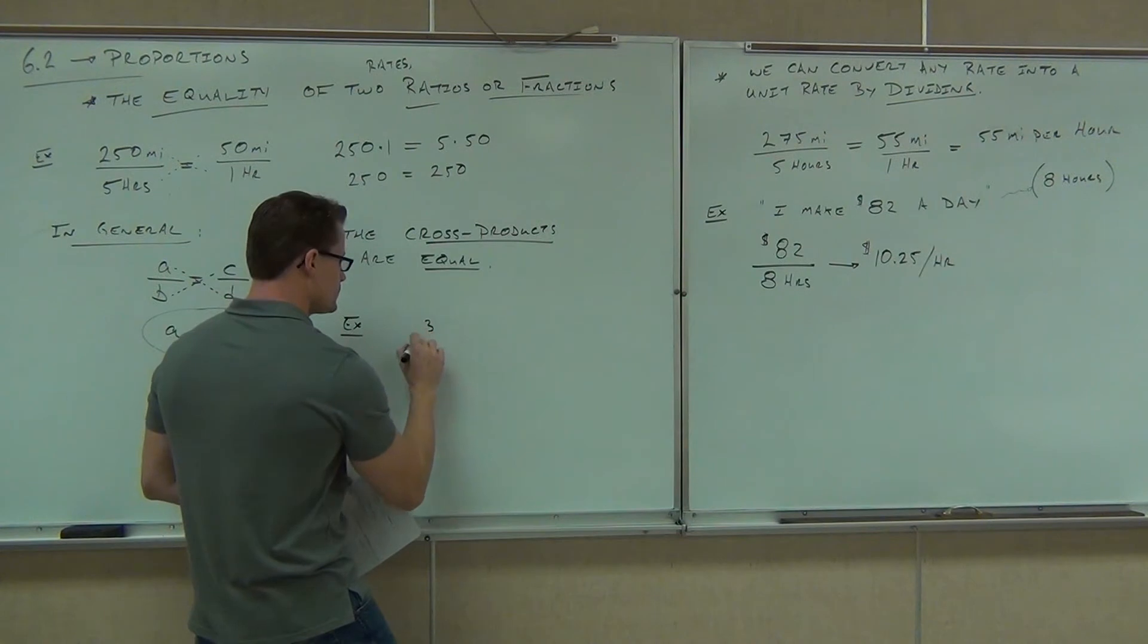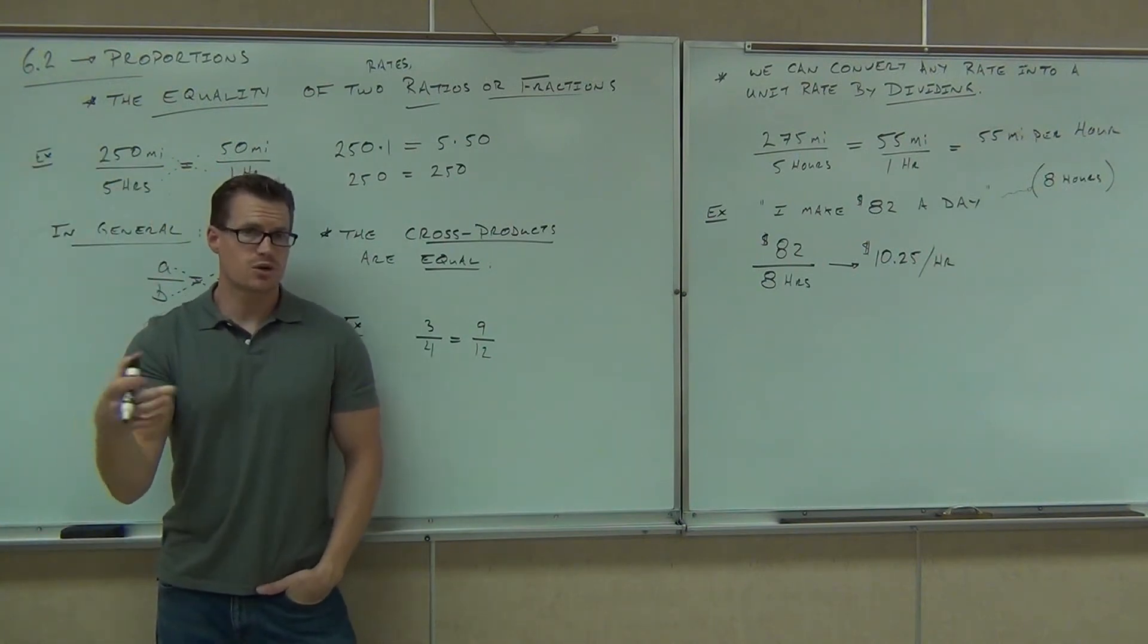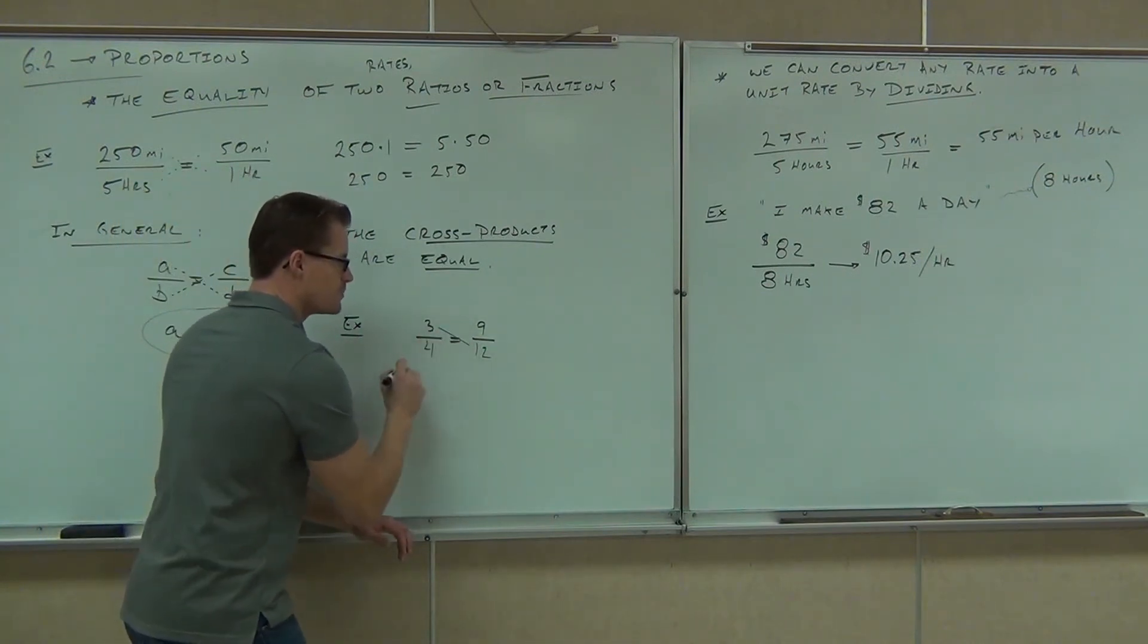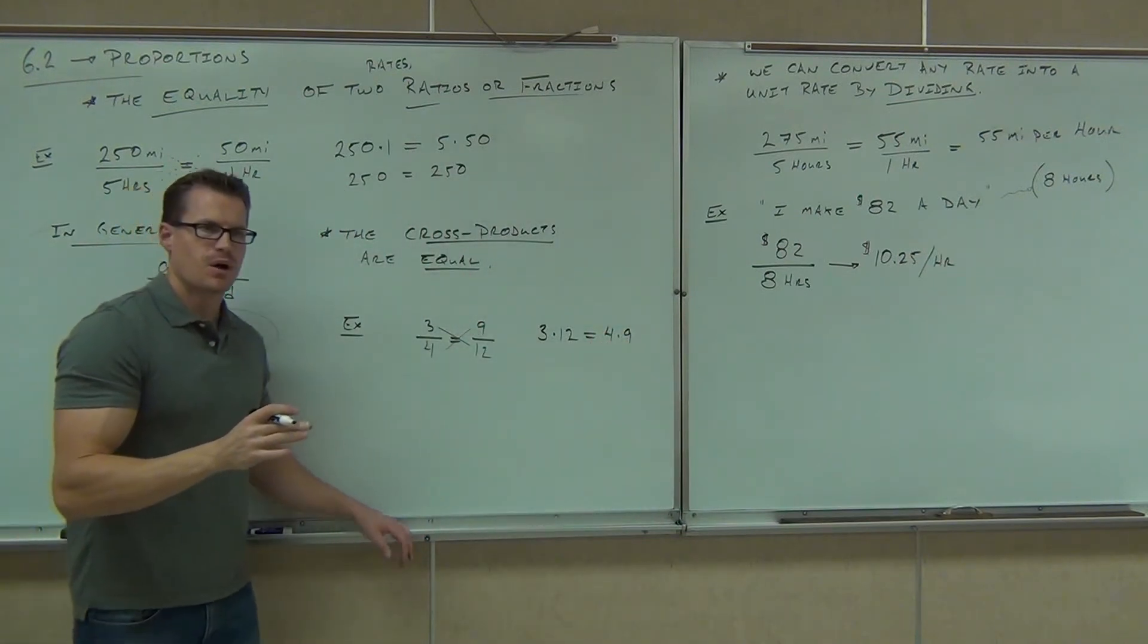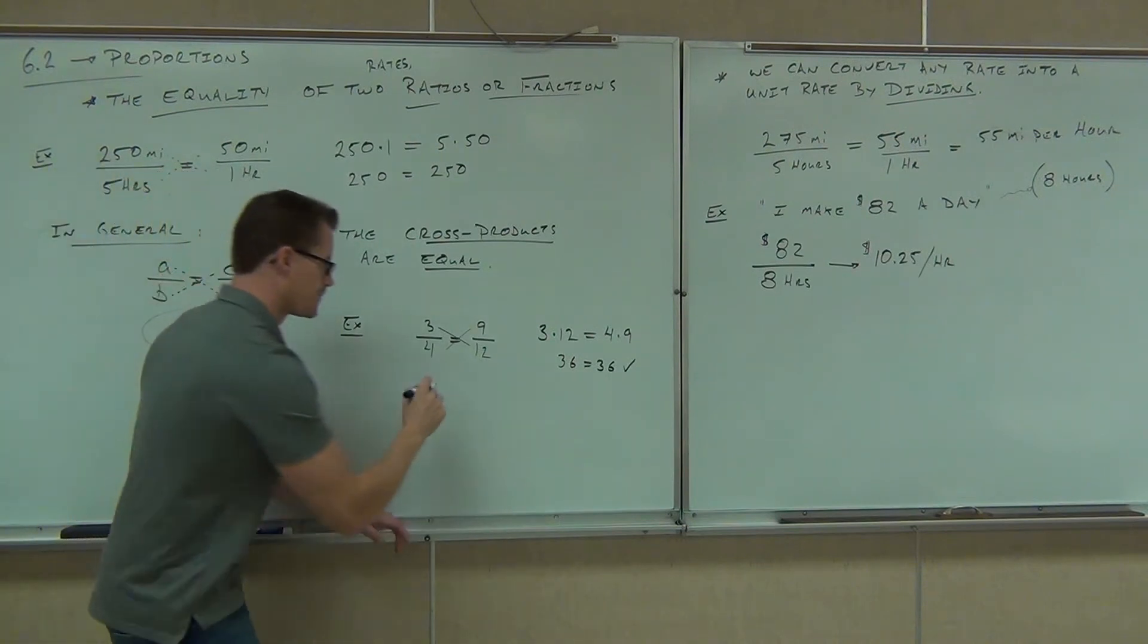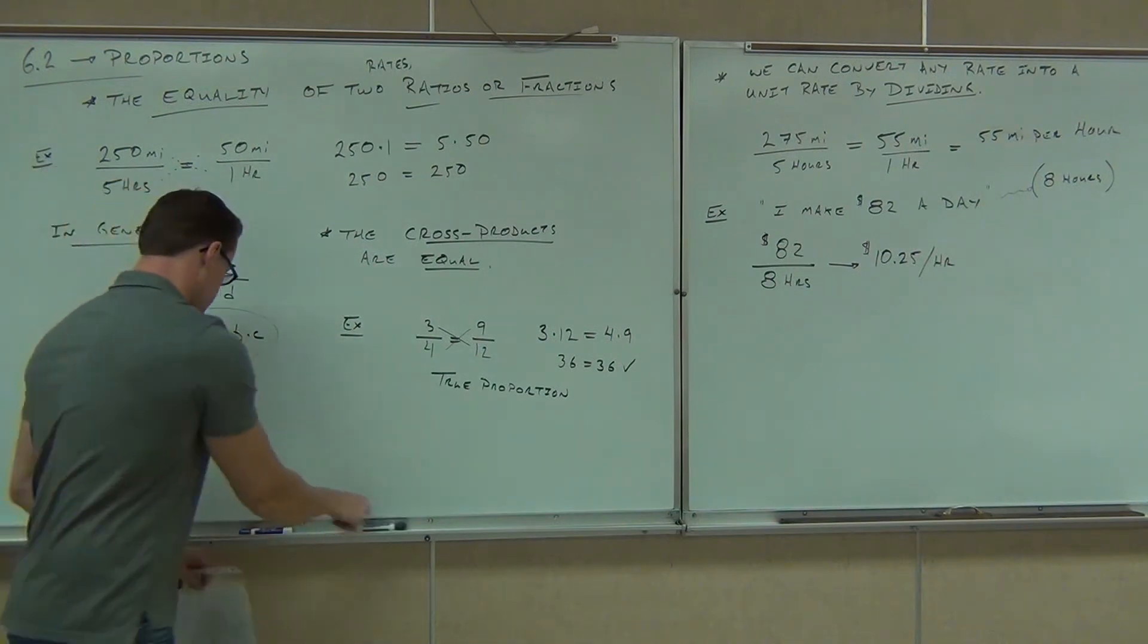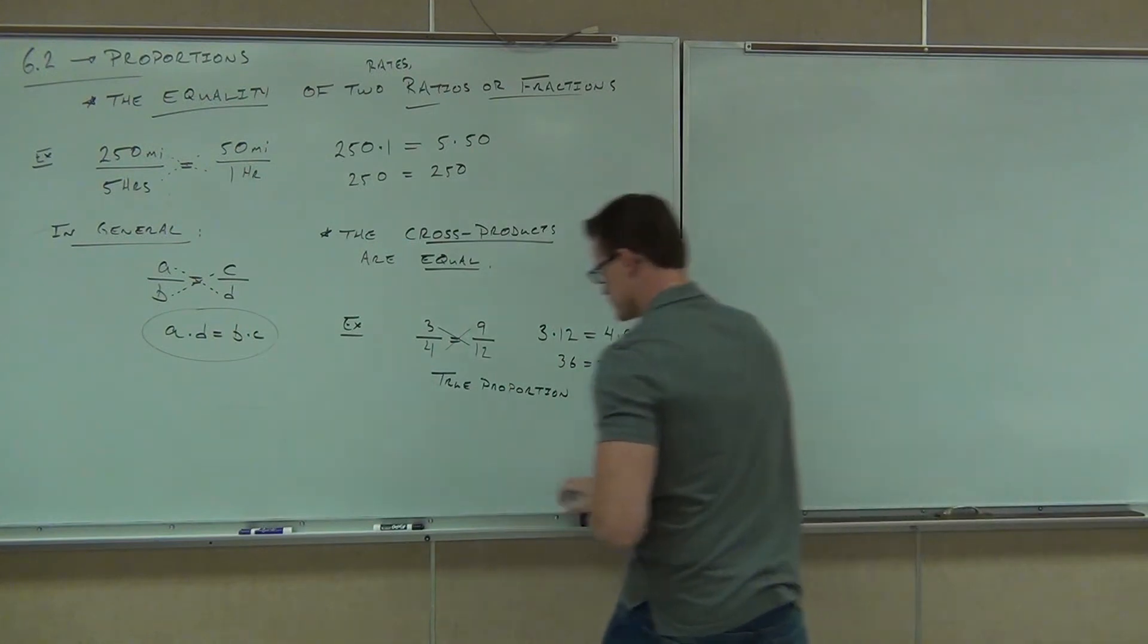We're asking, is 3 fourths equal to 9 twelfths? Now, I'll grant you, there's a couple ways to do this. You could just simplify this fraction and see if it's the same. But if you have some fractions that are kind of nasty looking or you don't really want to simplify any fractions, you could check it with a cross product. So, for instance, a cross product would say you multiply these two, you multiply those two, you get 3 times 12 equals 4 times 9, and you check to see if they're the same. Are they the same on both sides of your equation? Yes. Yeah, you get 36. You get 36. You put a little check mark, signifying, yeah, that's a true proportion. We'd say, yeah, true proportion. Not a problem, not a doubt.